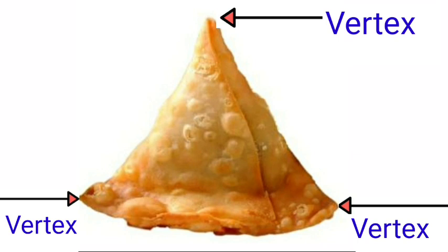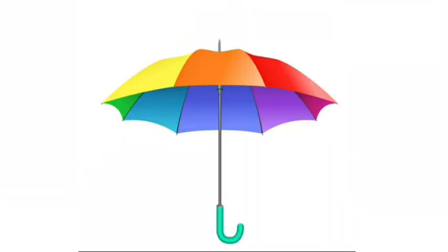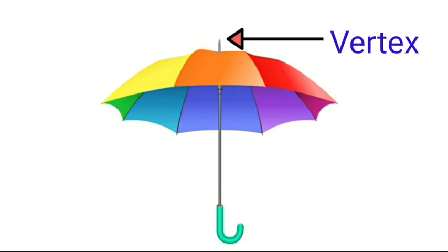Now tell me kids, what is it? Yes, it is an umbrella. And look — the uppermost part of the umbrella is its vertex.